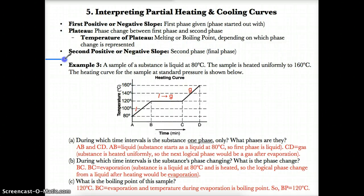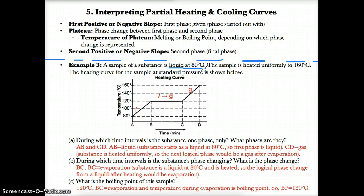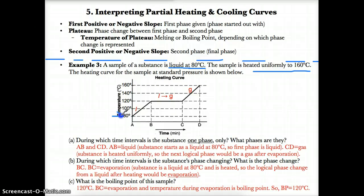Let's use what we just learned to interpret partial heating and cooling curves with example three. A sample of a substance is a liquid at 80 degrees Celsius and is heated uniformly to 160 degrees Celsius. Since the sample starts as a liquid and there's only one phase indicated by the positive slope here, this first phase must obviously be a liquid.